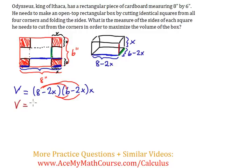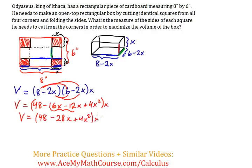So I get 8 times 6, 48; 8 times negative 2x is negative 16x; then negative 2x times 6 is negative 12x, so that's negative 28x combined; and finally negative 2x times negative 2x is 4x squared, all times x. So now distribute the x. We get 48x minus 28x² plus 4x³.